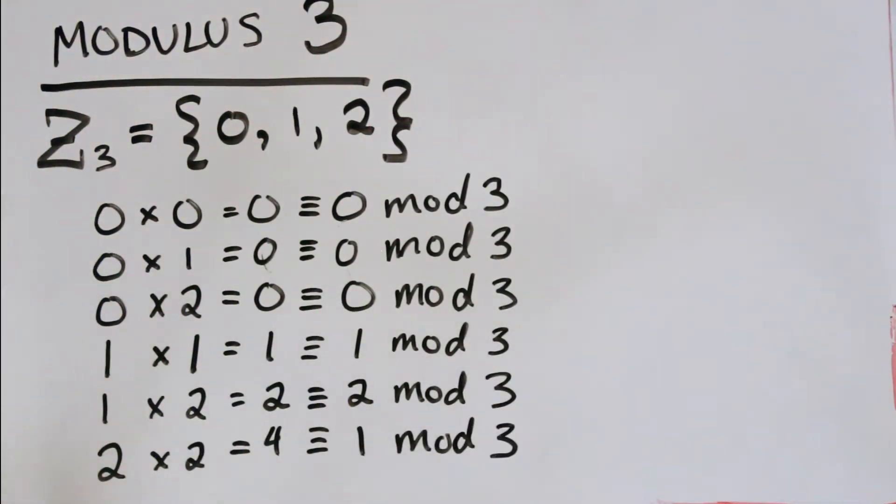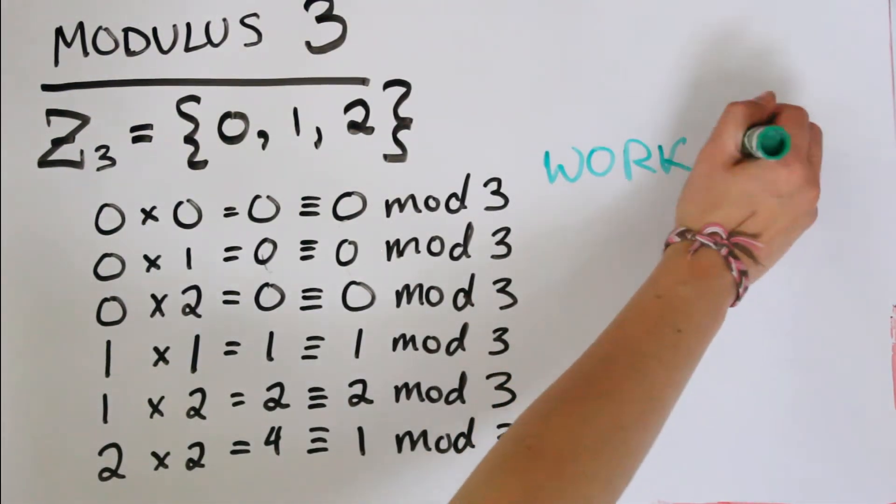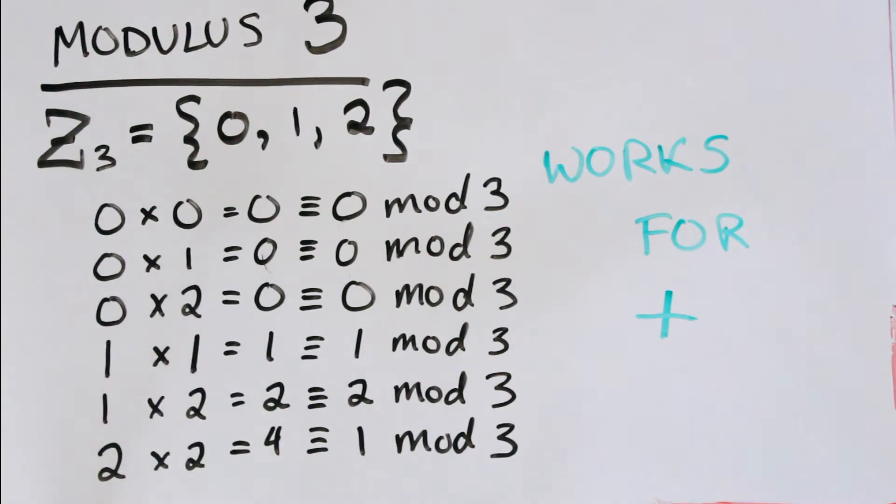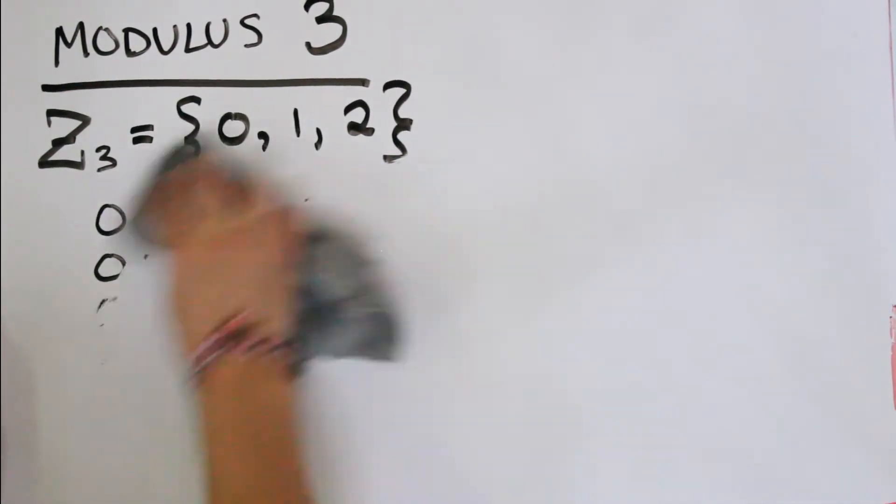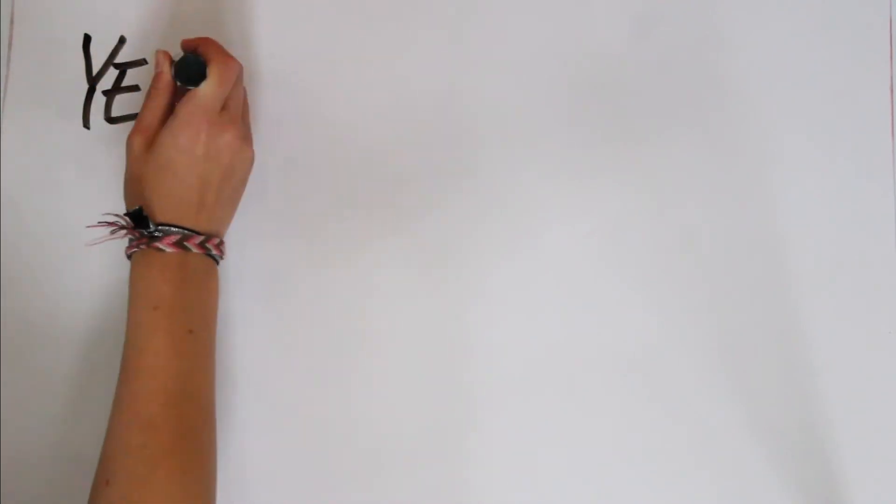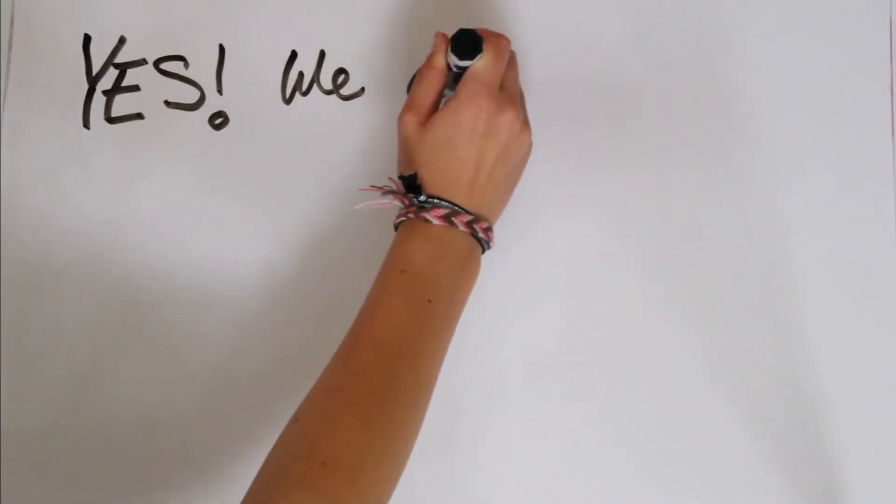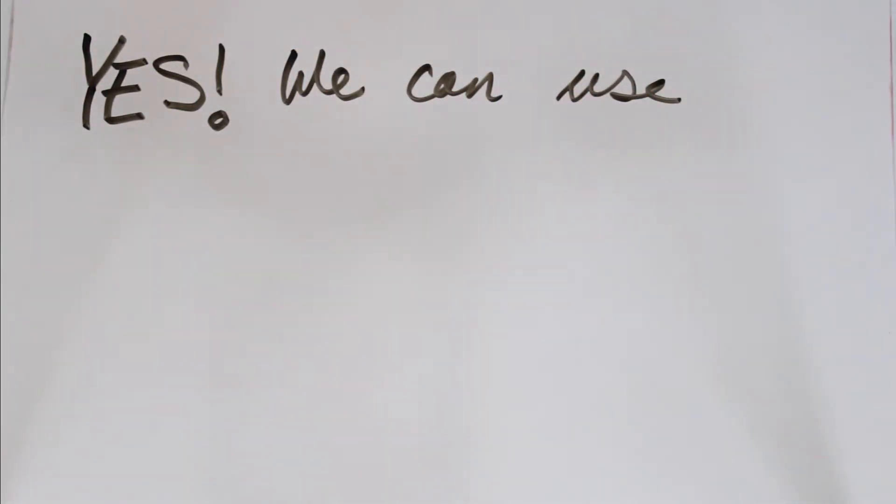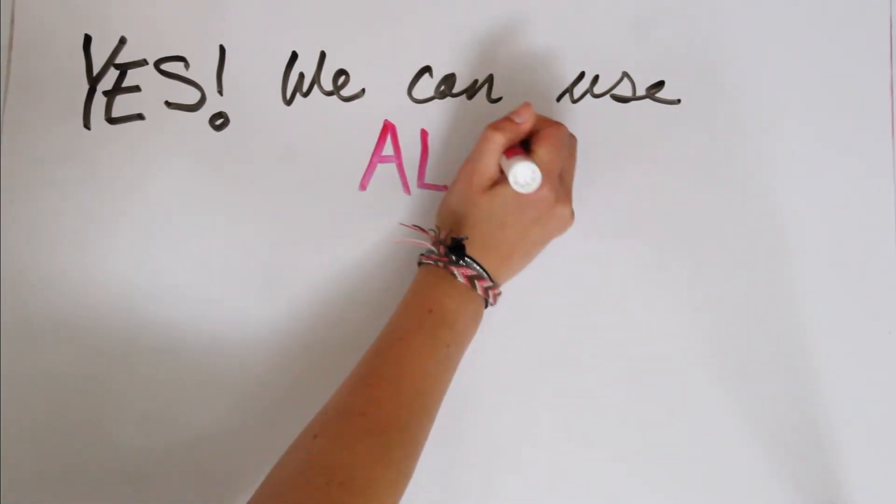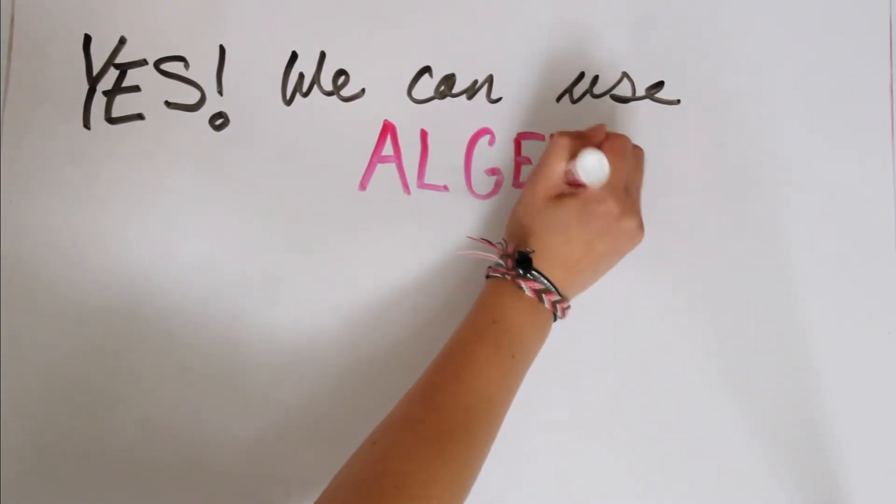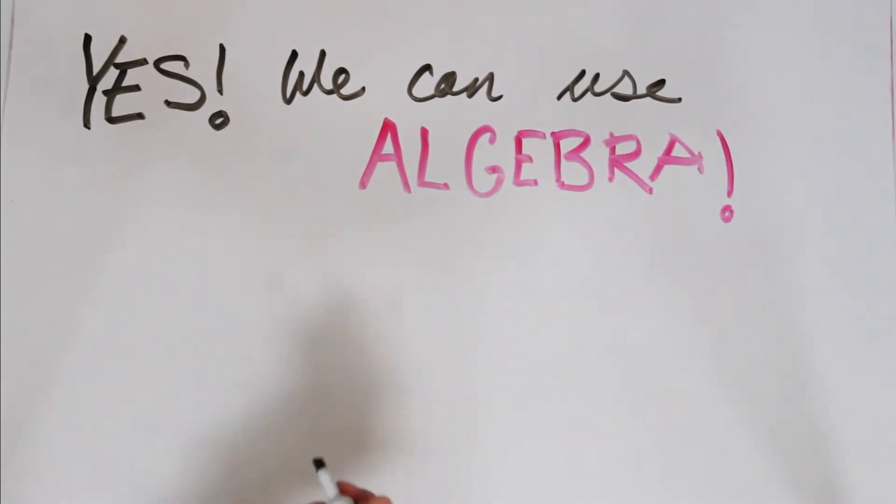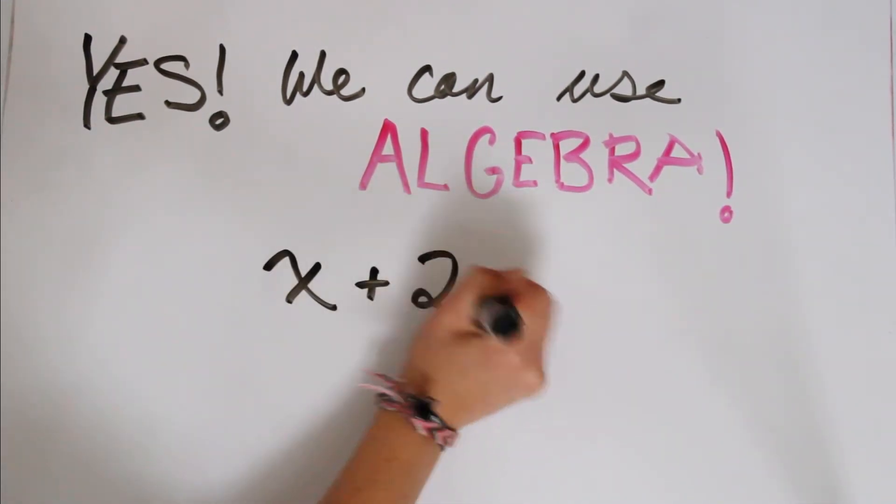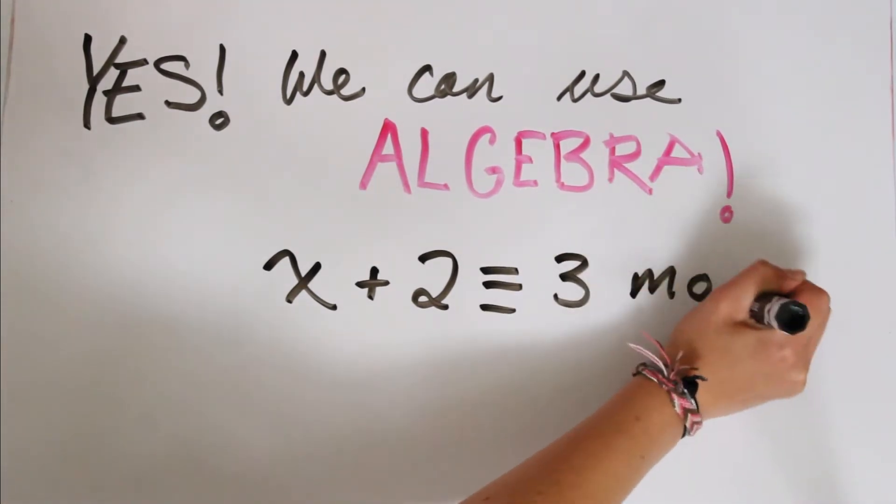And this same sort of technique by just adding the remainders works for addition as well. So you guys can do that on your own or for other modulus if you want. This tells us that yes, we can use algebra in the modulus world, which is really cool because algebra is such a useful tool in math that now we can use it in another respect than just the integers.